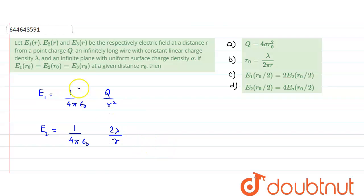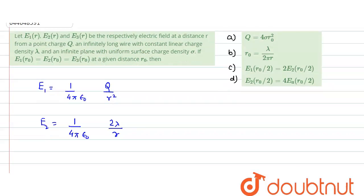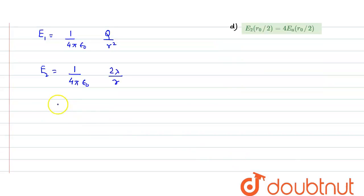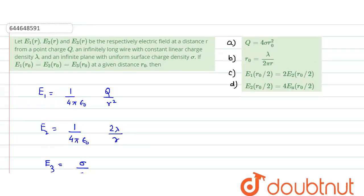E3, due to the infinite plane charge, is irrespective of distance and its value is constant. We write E3 as sigma over 2 epsilon.